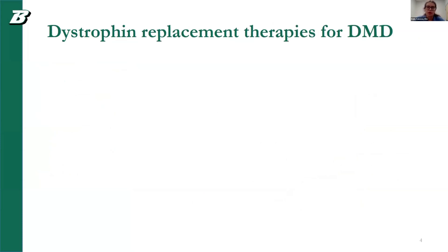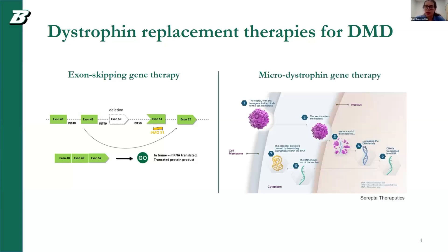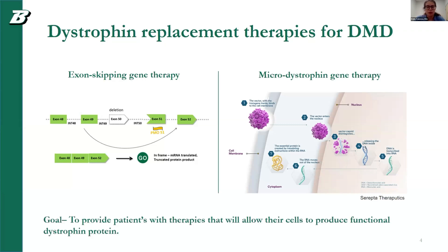When we talk about dystrophin replacement therapies for DMD, there are two main ones I will discuss. The first is exon-skipping gene therapy, where patients with an out-of-frame mutation that results in DMD phenotype are given a drug to restore the reading frame and allow a truncated dystrophin protein to be produced. There are also micro-dystrophin gene therapies, where an AAV delivery vehicle containing a micro-dystrophin protein construct is administered to patients so that their cells can produce a dystrophin protein.